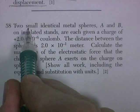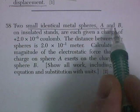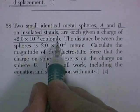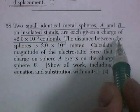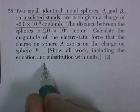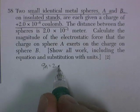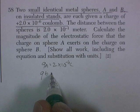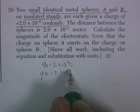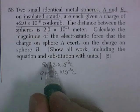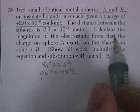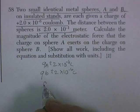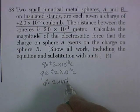Question 58. Two small identical metal spheres, A and B, on insulated stands are each given a charge of positive 2 times 10 to the negative 6 coulombs. So we have Q1, or QA, 2 times 10 to the negative 6 coulombs. QB, 2 times 10 to the negative 6 coulombs. They're both positive, so they'll be repelling. The distance between the spheres is 2 times 10 to the negative 1 meter.